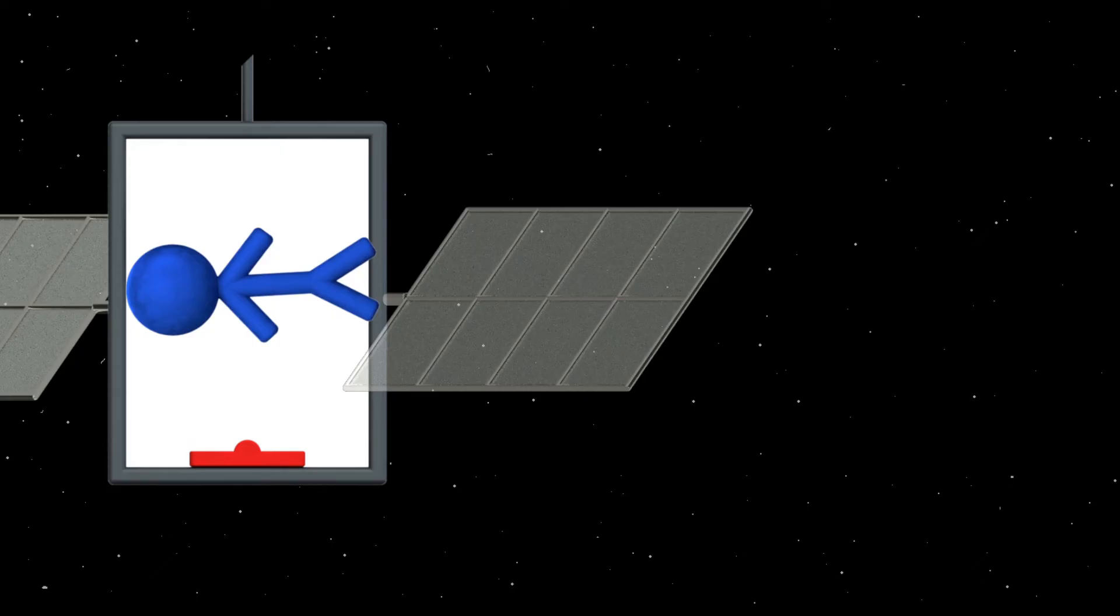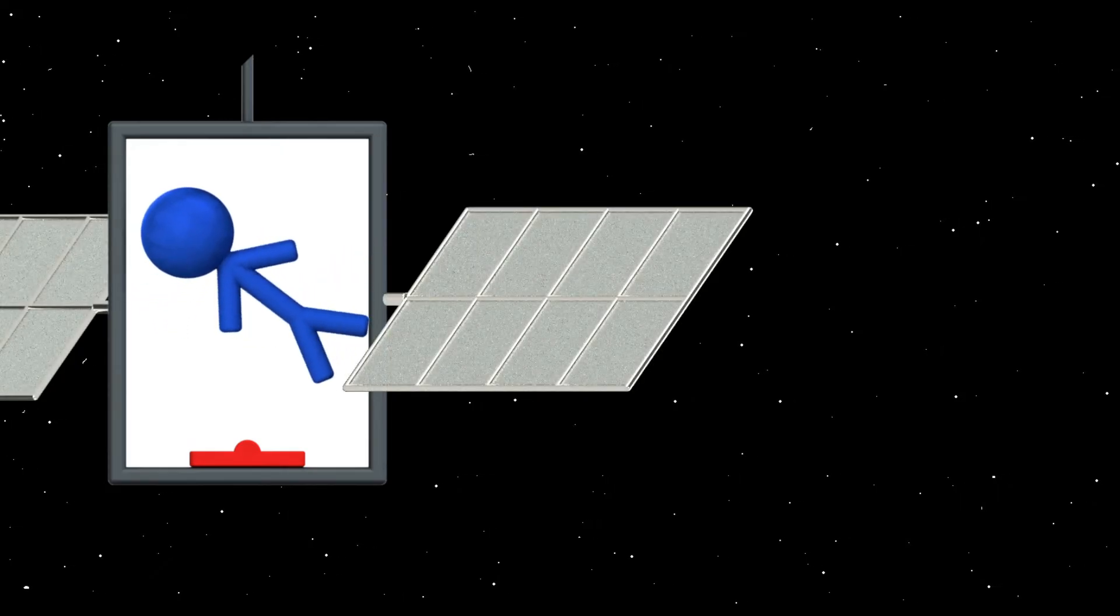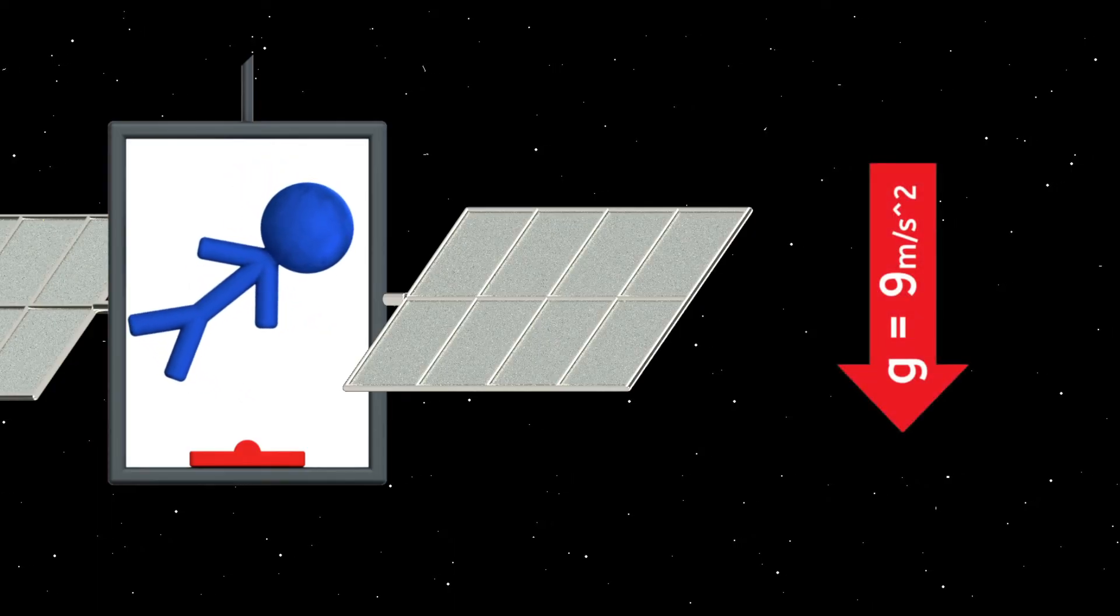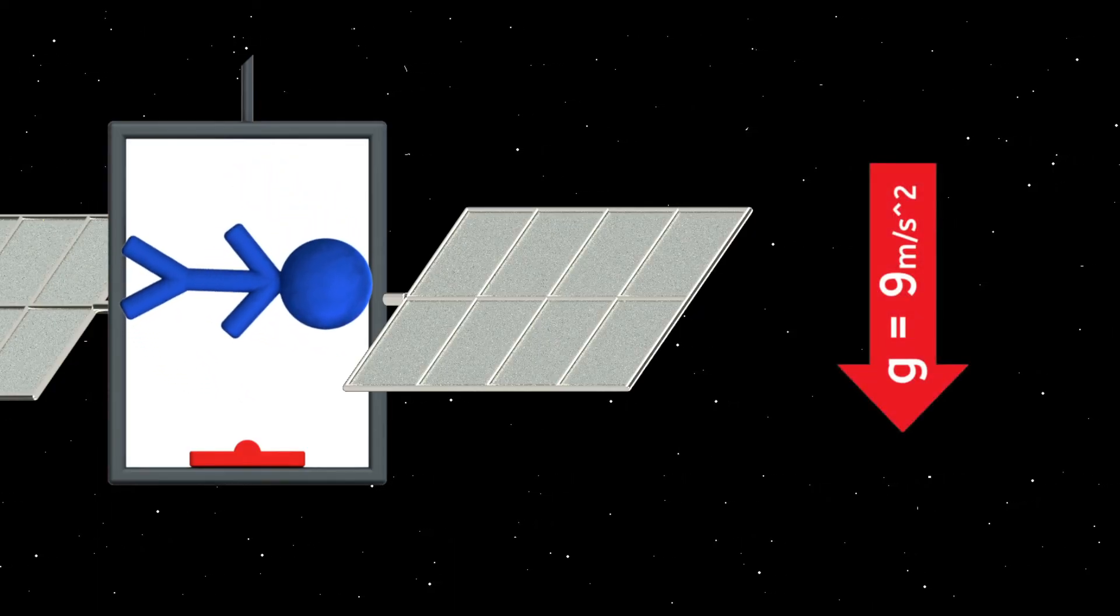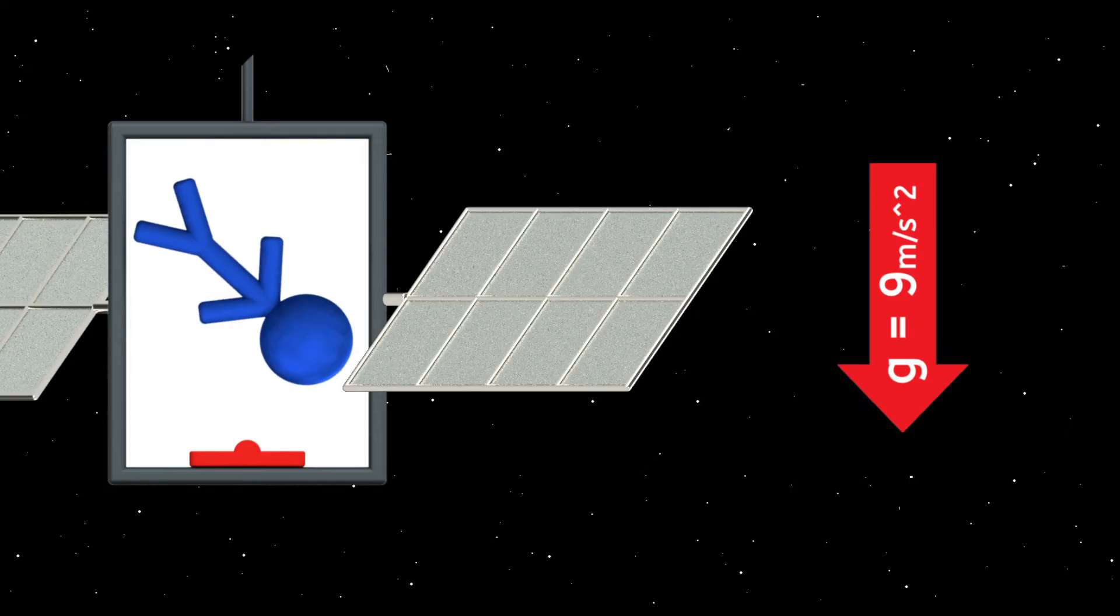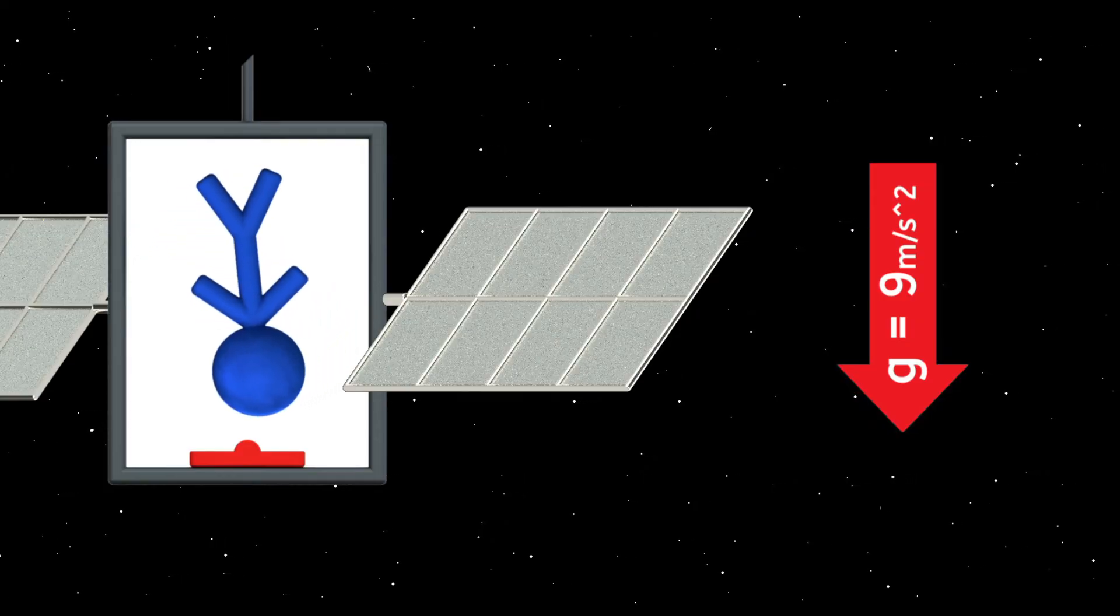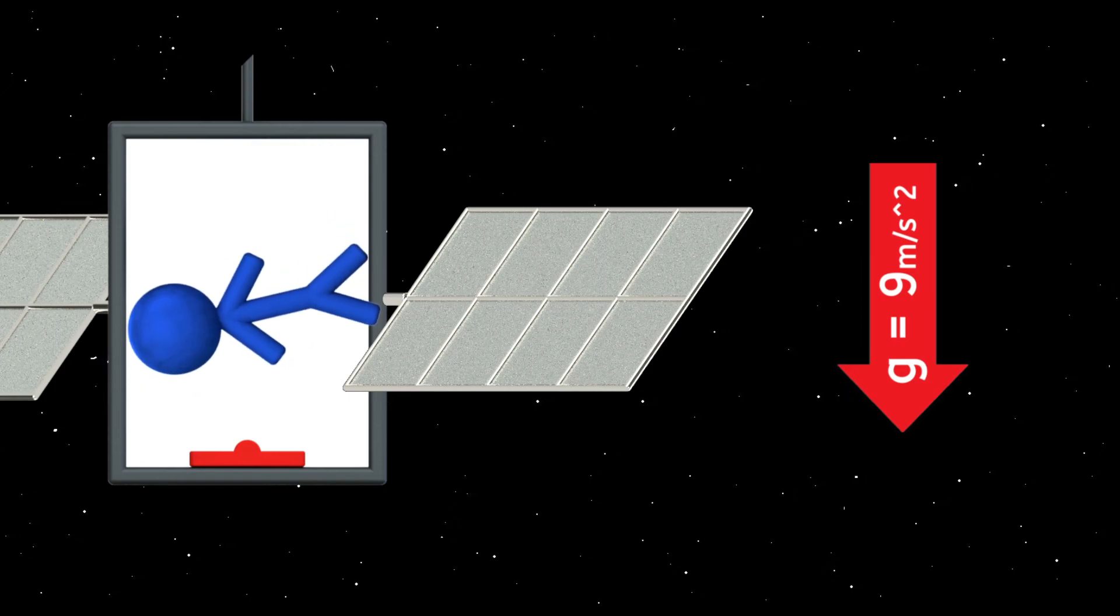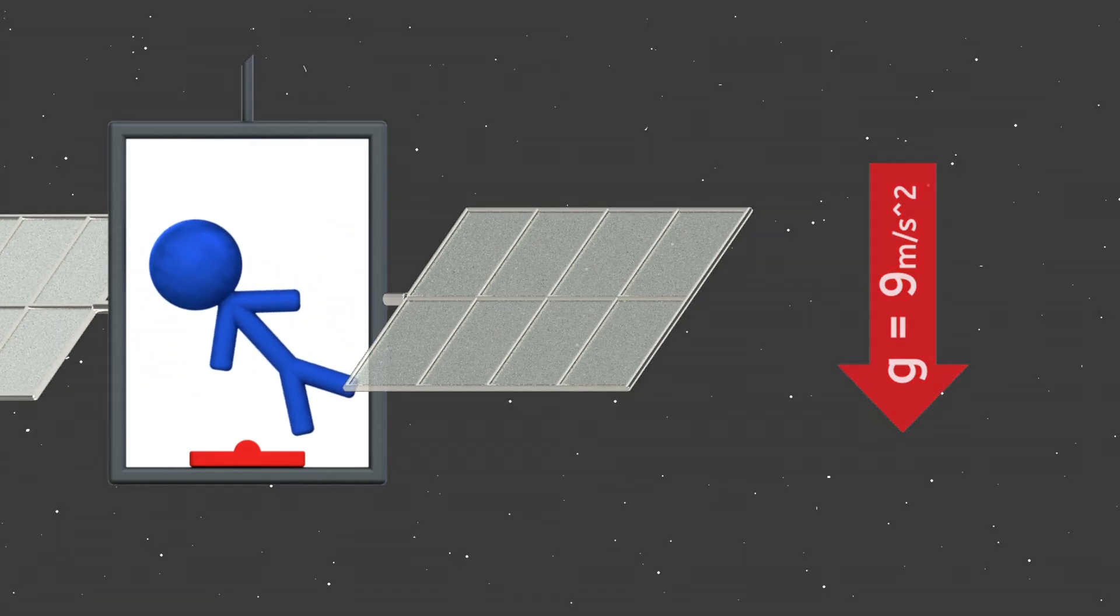And this is actually true for astronauts in space, too. The acceleration due to gravity at the International Space Station is about 9 meters per second squared, meaning the ISS and everyone in it are perpetually free falling toward the earth. An astronaut in orbit feels weightless, not because there's no gravity in space, but because nothing is holding them up.